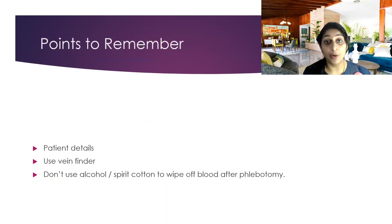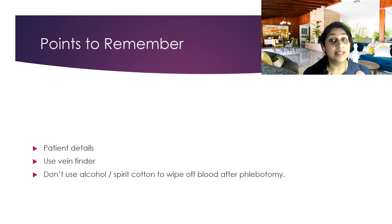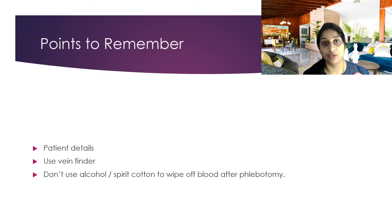Now we have seen how a phlebotomy room should look, and here are the most important points to remember while doing phlebotomy. First, the patient's details must be properly entered on the test tube. Second, use a vein finder if you have difficulty finding a vein — for obese patients or kids. Third, please do not use alcohol or spirit cotton to wipe off blood after phlebotomy, because alcohol causes dilation of the vein and blood keeps leaking out. Use only dry cotton wipes to wipe off the blood after you have finished withdrawing blood.